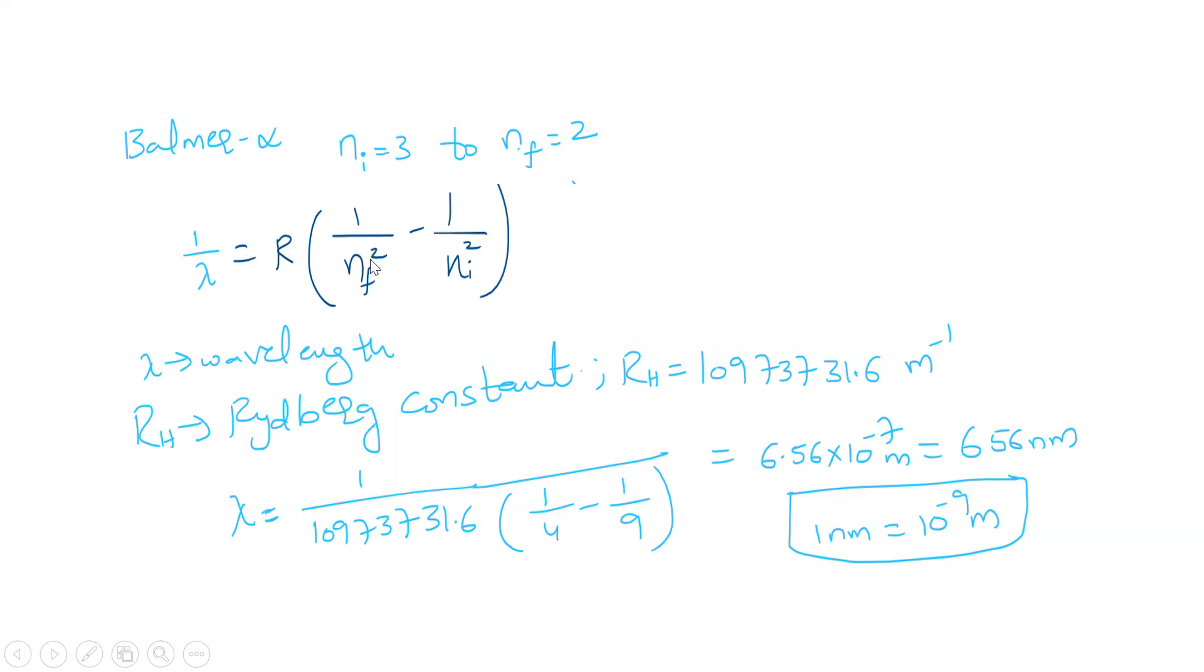When we substitute Ni equal to 3 and Nf equal to 2, and the Rydberg constant value is 10973731.6 per meter, we calculate and get 6.56 into 10 power minus 7 meter, that is 656 nanometer. This is the wavelength of emitted photons.